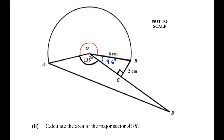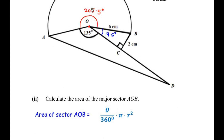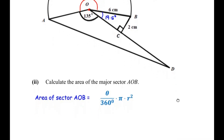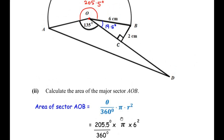To find the reflex angle AOB, we subtract 135 and 19.5 from 360 degrees, because this is the angle at point O. This gives the reflex angle AOB as 205.5 degrees. The formula for the area of a sector is theta over 360 degrees times pi r squared, where theta is 205.5 degrees and r is OB, which is 6 centimeters.